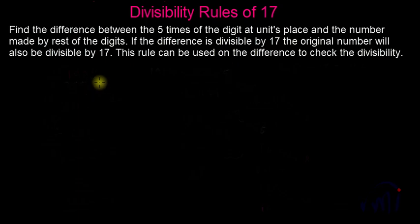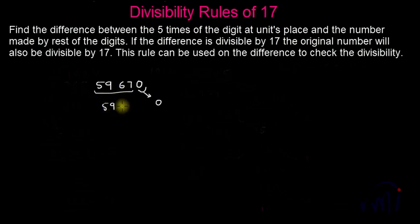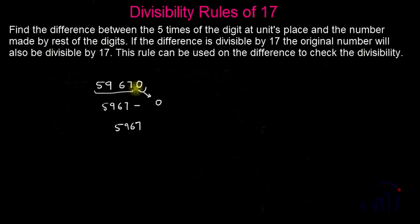Now let's take a few more examples. The number I am going to take is 59,670. Zero multiplied by 5 is 0, and the number made by the rest of the digits is 5,967, so the difference is 5,967. When you have a 0 at the units place, you can omit that 0 and check the divisibility of the number made by the rest of the digits, because you are going to get that number only. Here we got 5,967.